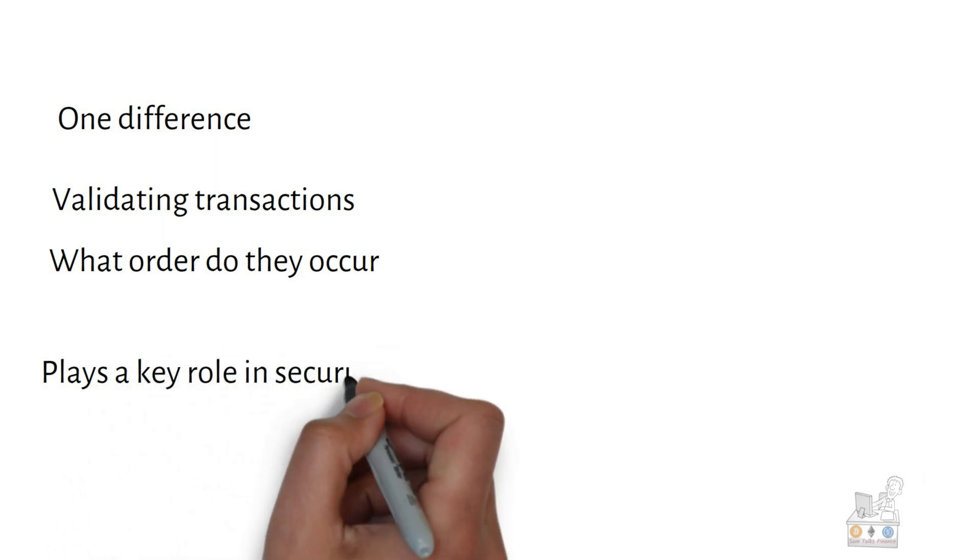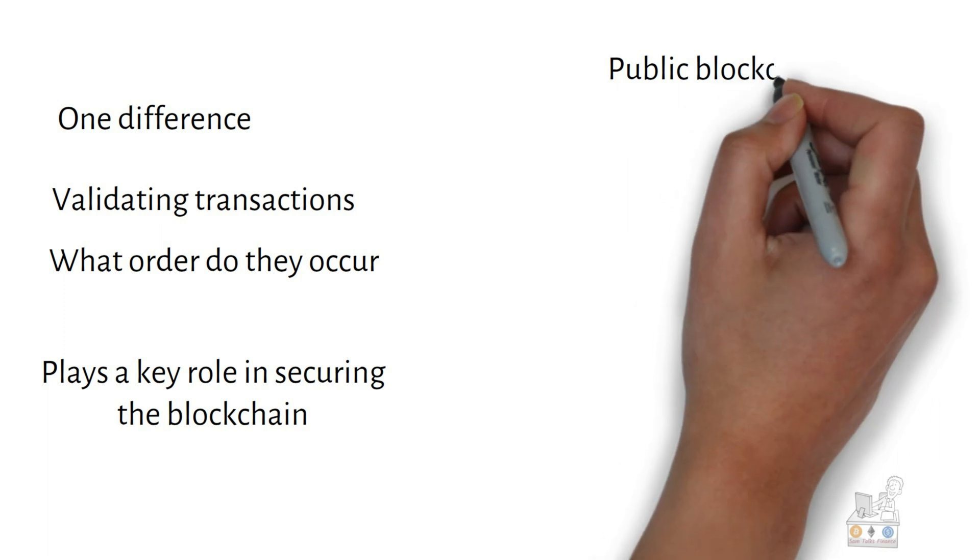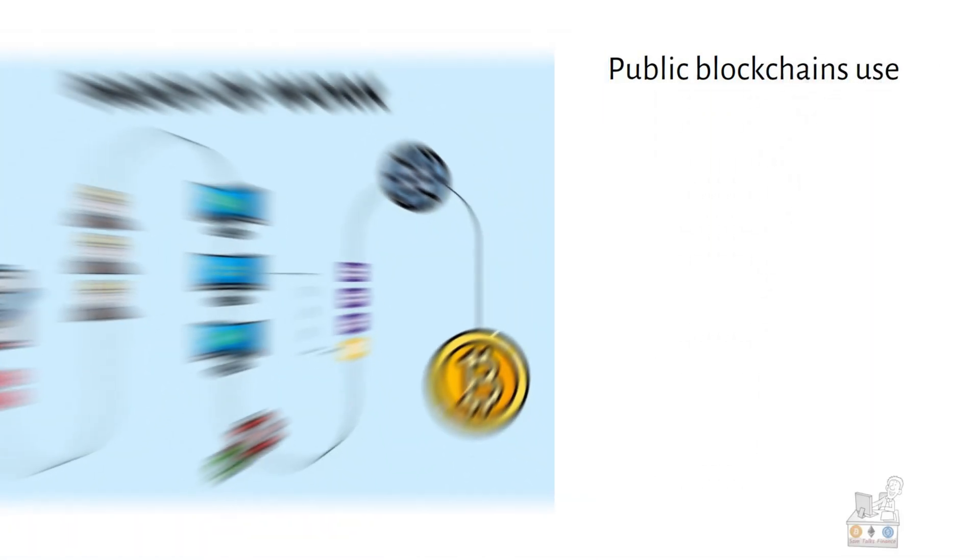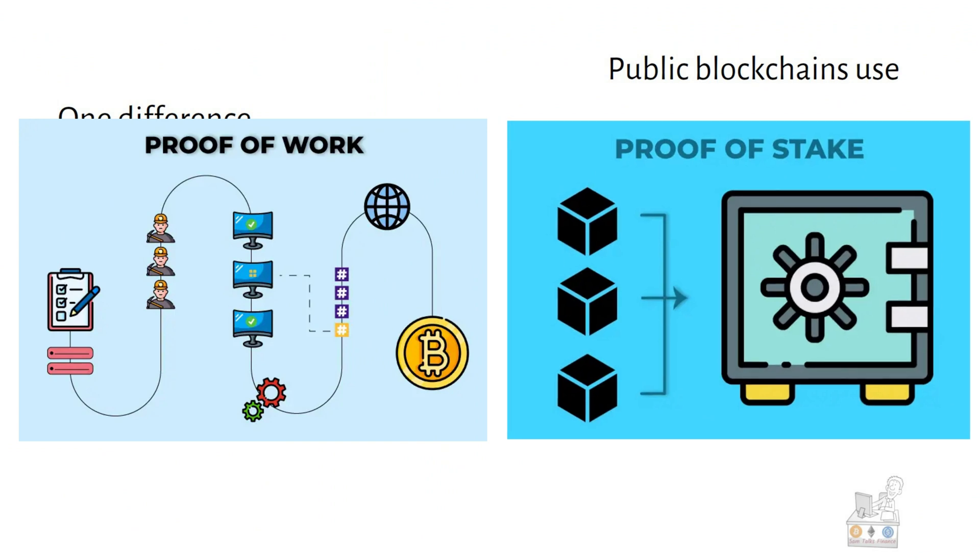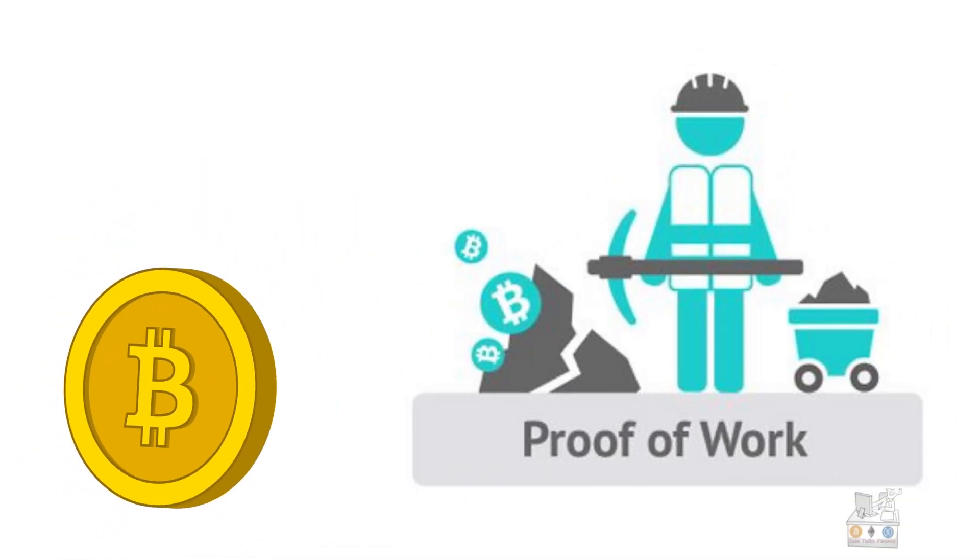This consensus mechanism plays a key role. Today, many blockchain networks use proof-of-work or proof-of-stake process. The most widely used consensus mechanism is proof-of-work, which is very popular.